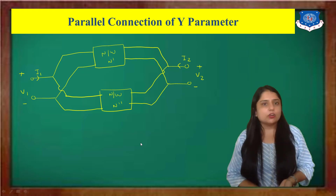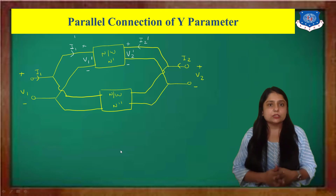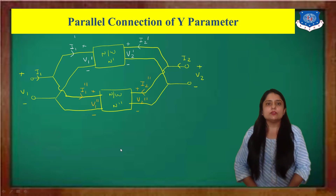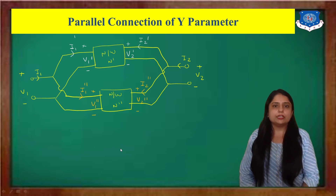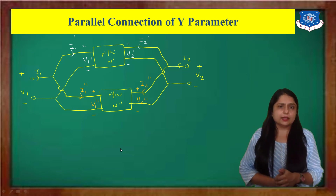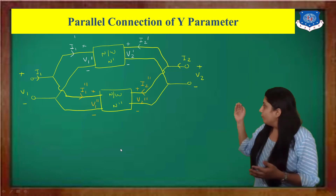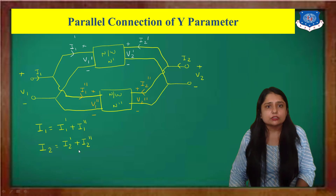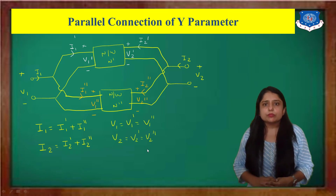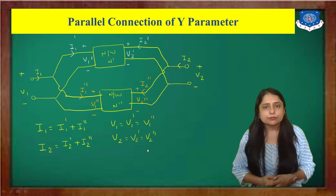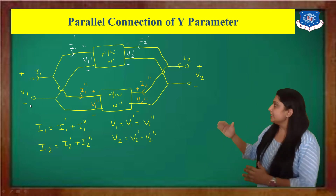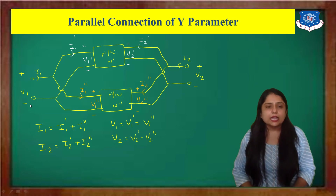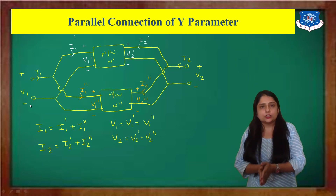From the diagram, since this is a parallel connection: V1-dash equals V1-double-dash equals V1, and V2-dash equals V2-double-dash equals V2. Since I1 is divided between two branches, I1 equals I1-dash plus I1-double-dash. Similarly, I2 equals I2-dash plus I2-double-dash.